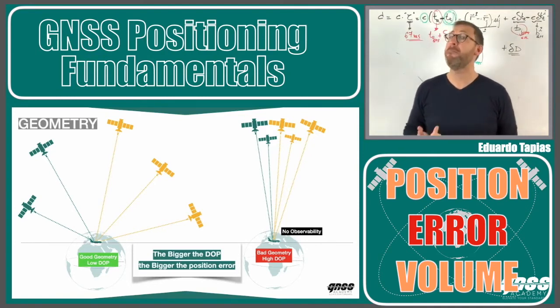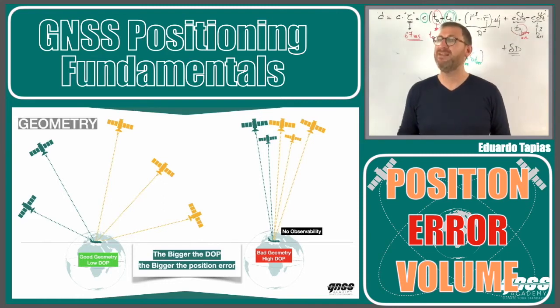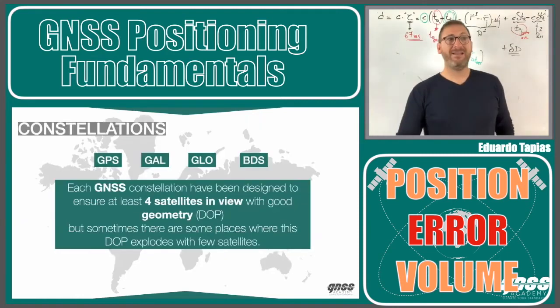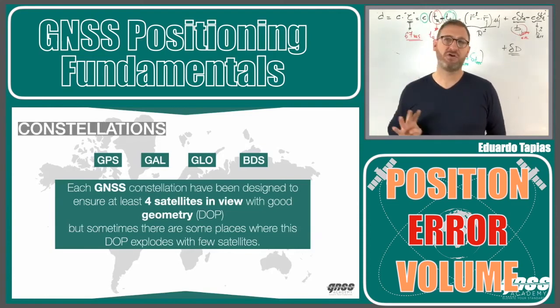From the horizontal point of view, we are always better than from the vertical point of view. So, vertically, the geometry in the vertical domain is worse. Then, the objective of a GNSS constellation is not longer to have only four satellites in view, but to have four satellites in view with good geometry.